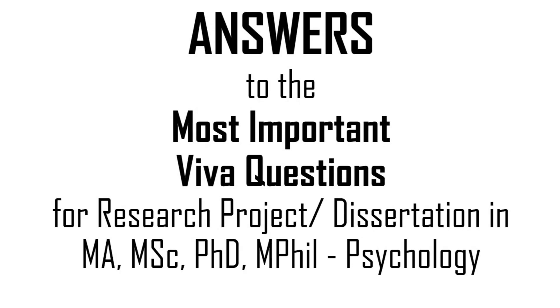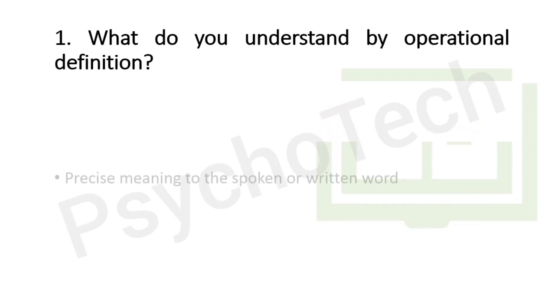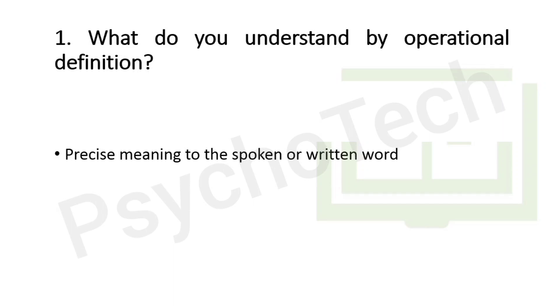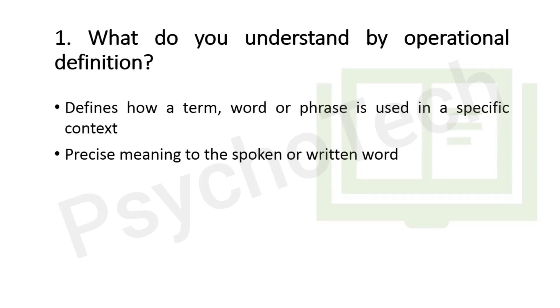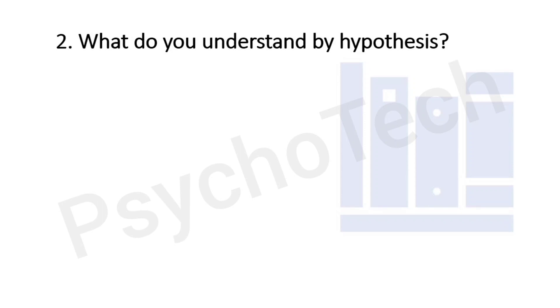Our first question is: what do you understand by operational definition? Basically, an operational definition gives a precise meaning to a spoken or written word. It defines how a term, word, or phrase is used when applied in a specific context, implying that a word may have different meanings in different situations. More precisely, an operational definition is the specific way in which a variable is measured in a particular study. The process of creating an operational definition is known as operationalization.